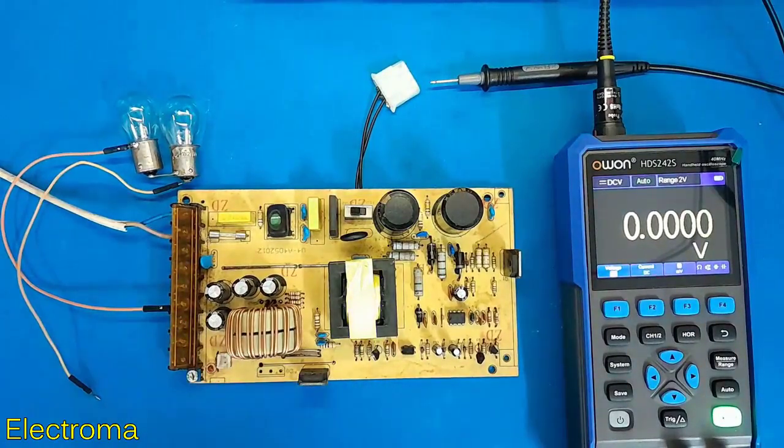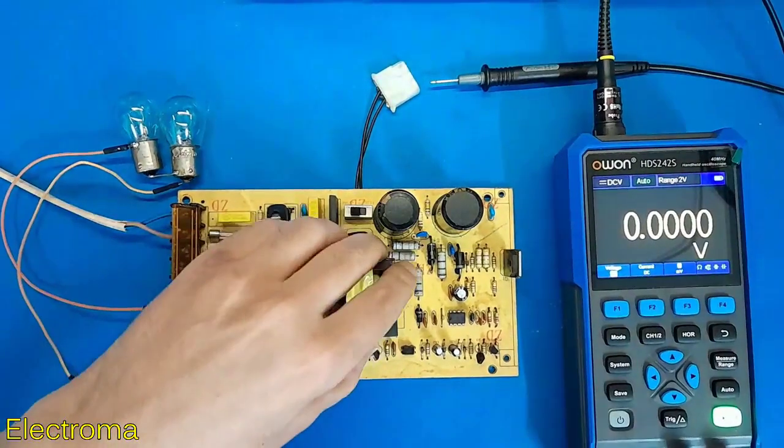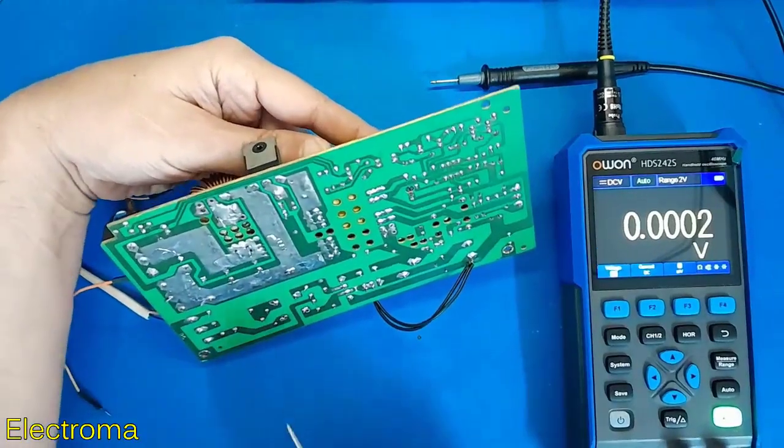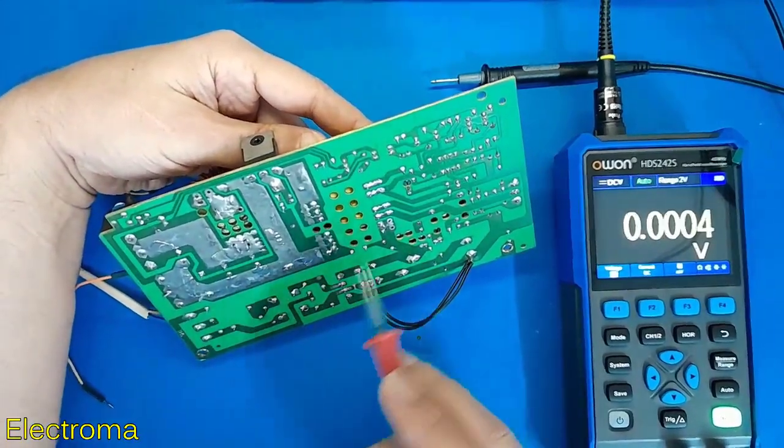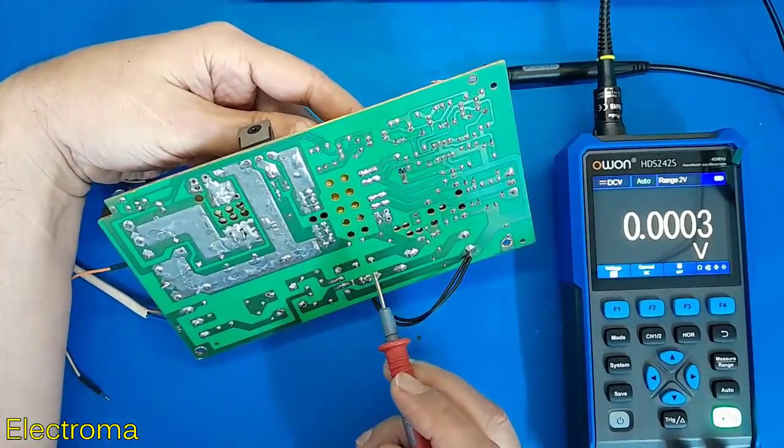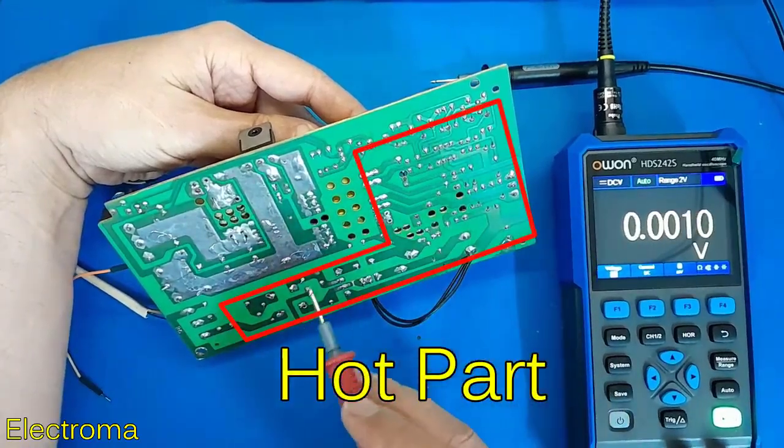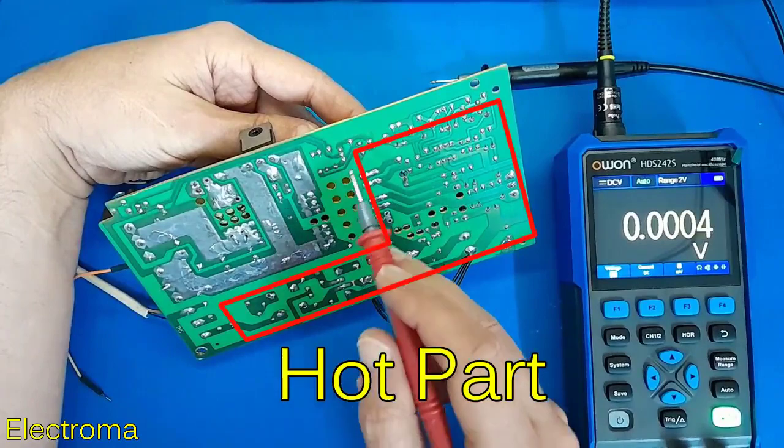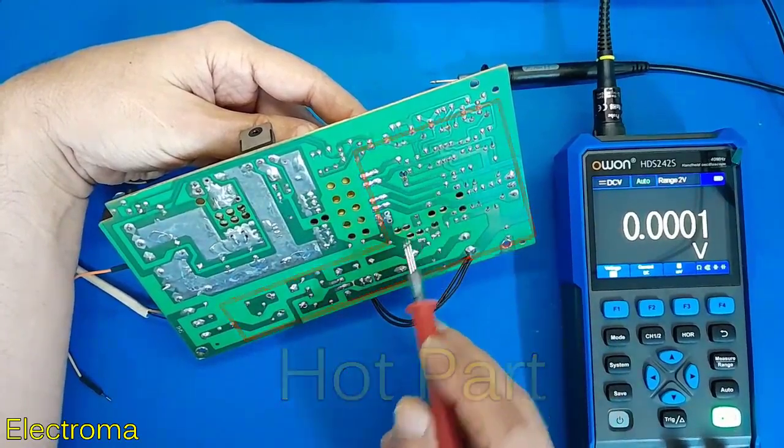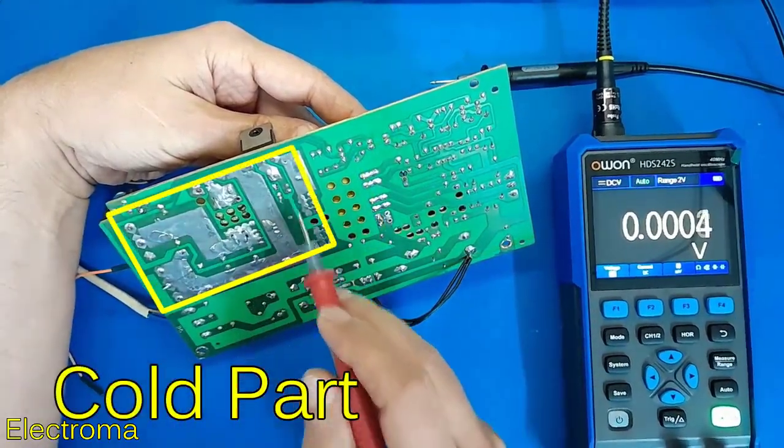There are two ground or zero volts in this device. The main part of the hot section that includes MOSFET IC and its driver ground, and the cold section which includes the output of the device and the feedback circuit sampler section.